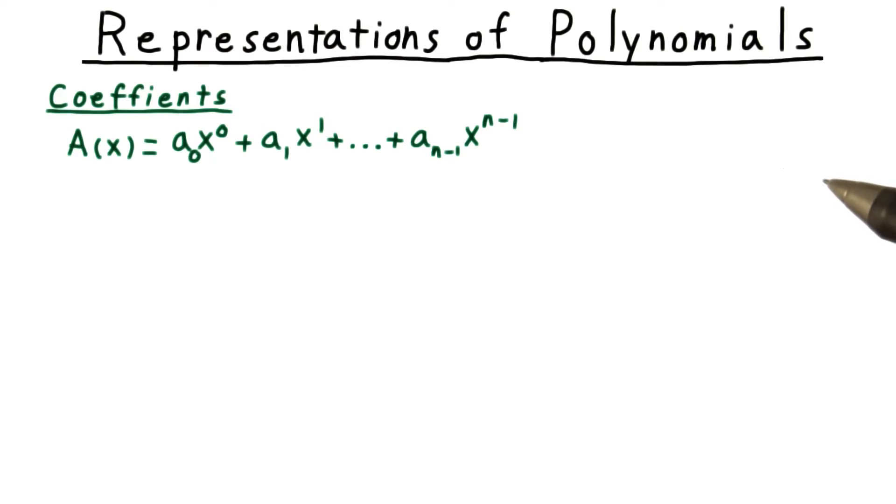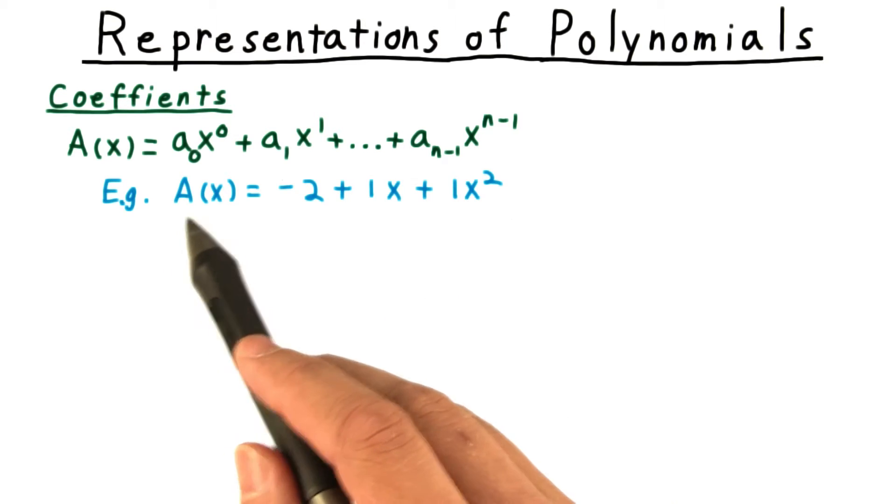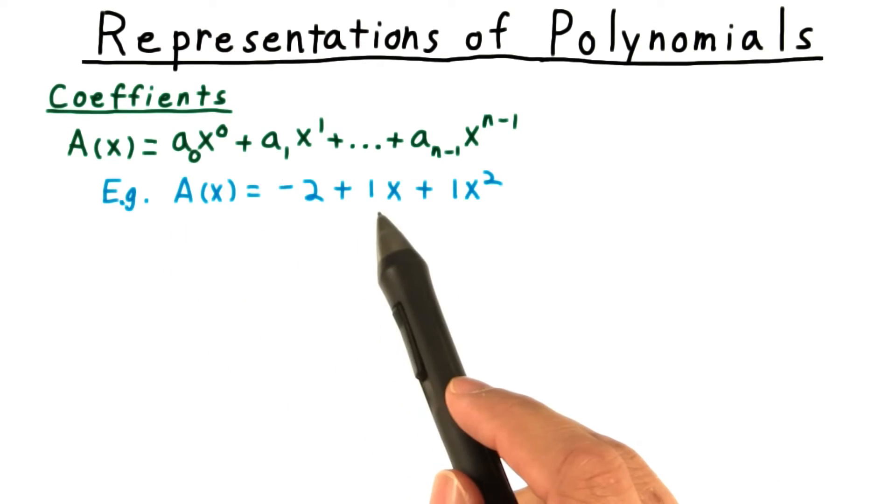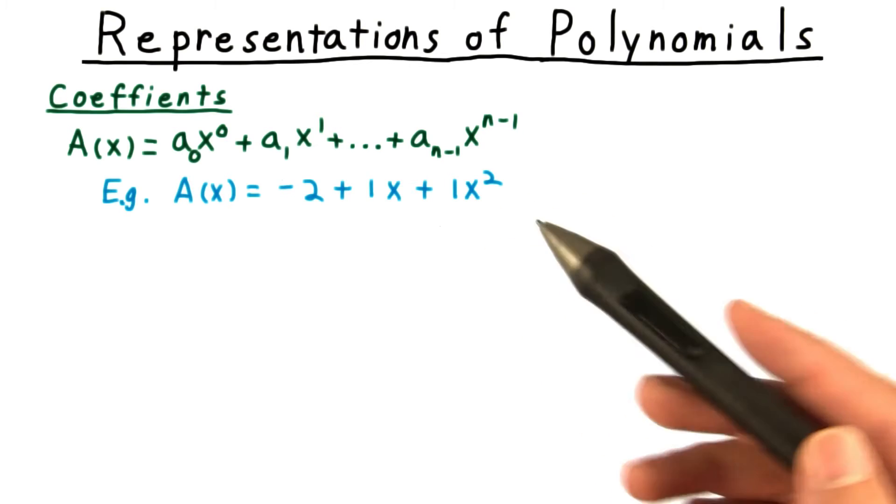So far, we've assumed that polynomials are represented by their coefficients. For example, A(x) = -2x + 1x + 1x².